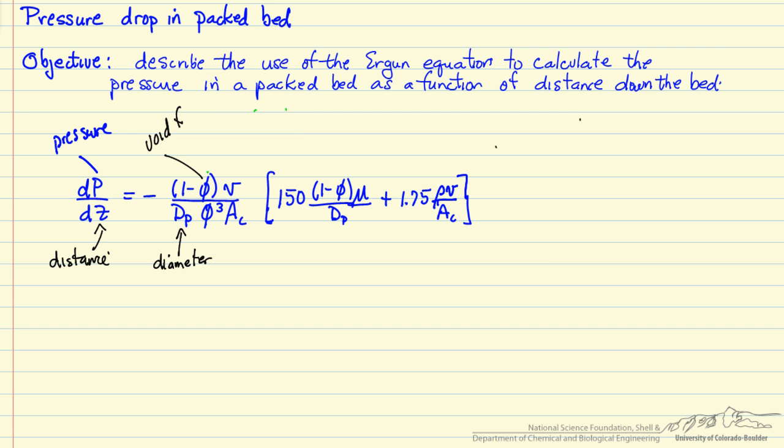This is the void fraction of the bed, namely the fraction of the volume of the tube that is not occupied by the catalyst particles. Of course the void fraction is also here in the denominator, and this is the cross-sectional area. As the cross-sectional area gets smaller, the pressure drop gets larger.